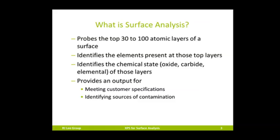This technique probes the very top surface layer of a material, which is only 30 to 100 atomic layers thick. It is very sensitive to minor amounts of the elements present on that surface. Most importantly, it also identifies the chemical state of those elements and is able to distinguish, for example, whether an atom of chromium on the surface is in its metallic state or is part of a chromium oxide molecule. This allows the quality of stainless steel passivation to be assessed and documented in keeping with industry specifications — for example, it can provide analysis for Semitech 9012043B, a standard for the semiconductor processing equipment industry.